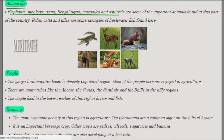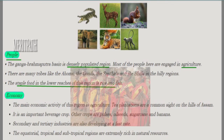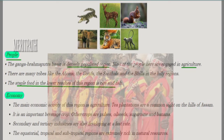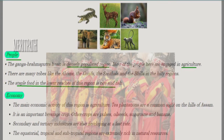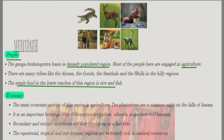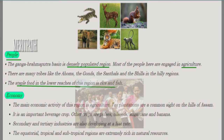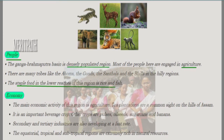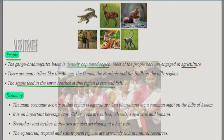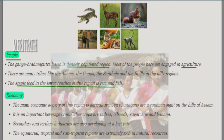The Ganga-Brahmaputra region is a densely populated area. The main occupation is agriculture. Tribes like Ahoms, Gonds, Santals, and Bhils live in the hilly region. The staple food of this region is rice and fish.